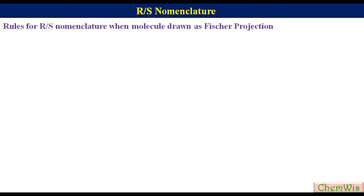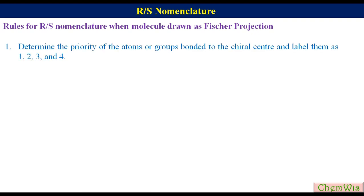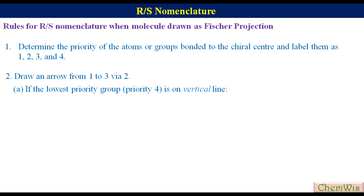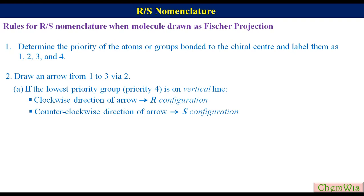There are certain rules, very similar to those we have already discussed in the last lecture. First, determine the priority of atoms or groups bonded to the chiral center and label them as 1, 2, 3, and 4. Then draw an arrow from 1 to 3 via 2. If the lowest priority group (priority 4) is on the vertical line, then a clockwise direction of arrow suggests R configuration.